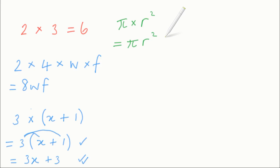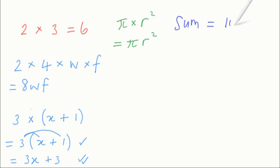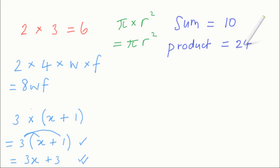Now I want to show you how to solve a worded problem that involves the word product. Here it is: the sum of two numbers is equal to 10 and their product is equal to 24. What are the two numbers? One way to do this is to start by figuring out what numbers sum to equal 10. All sum means is the answer you get when you add two or more things together, so we need two numbers that add up to 10.